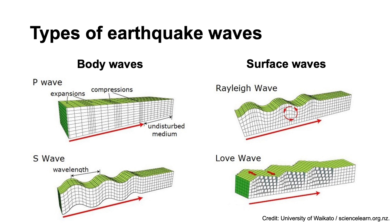S waves, or secondary waves, travel more slowly and arrive after the P waves. They're shear waves, so the sense of movement is from side to side, and unlike P waves, they can't pass through liquids. Surface waves travel more slowly than body waves, but are very destructive. R waves, or Rayleigh waves, travel through the surface rocks in a kind of vertical rolling motion, a bit like the waves on the surface of the sea, while L waves, or love waves, cause the surface rocks to move back and forth in a kind of lateral or horizontal motion. Surface waves are the ones that cause the most damage to buildings and other structures.